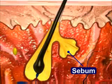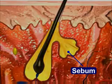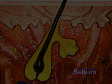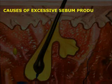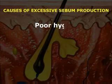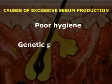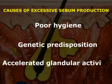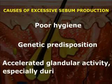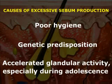Overproduction of sebum is related to the disease called acne, or commonly pimples. Sebum may collect excessively as a result of poor hygiene, genetic predisposition, or accelerated glandular activity, especially during adolescence.